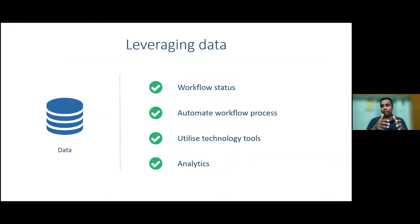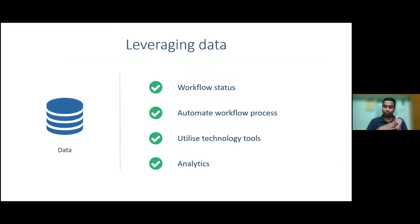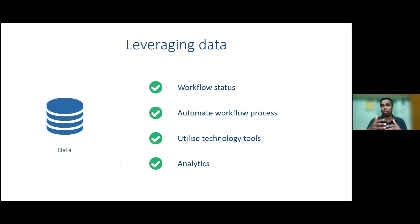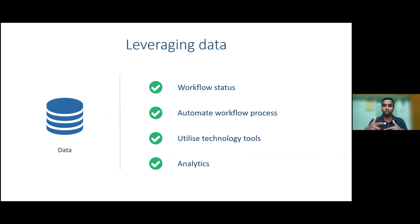Leverage data for all of these things. Whenever you have workflows, make sure you have good workflow statuses — draft stage, peer review, publication ready, published. Defining those statuses helps with reporting: if someone asks where a documentation article is, you can say exactly what stage it's in and how long it's been there, making it easy to track progress.